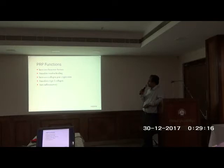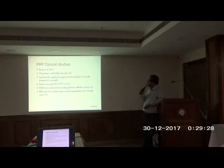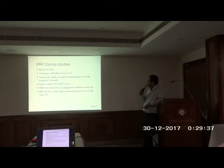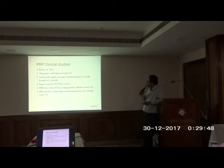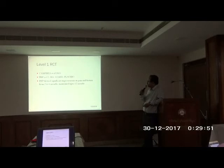PRP functions by increasing the bioactive factors inside the joint. It stimulates tendon healing, increases collagen gene expression, stimulates type I collagen, and acts as a biological mediator. Some studies favour the results of PRP — the effect lasts more than six months. PRP is better than HA in young patients with less severe OA, and both PRP and HA have shown improvement in patients over 50 years and in early OA. A Level 1 RCT also confirms that the effectiveness of PRP is maintained up to 12 months.